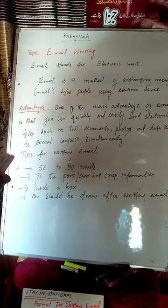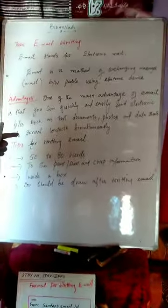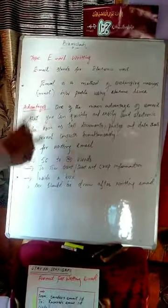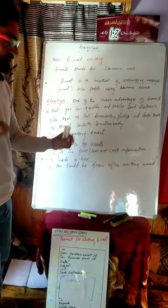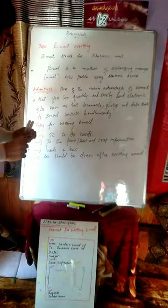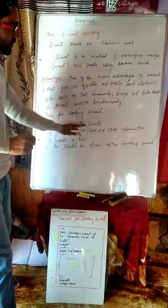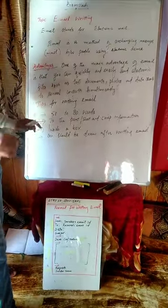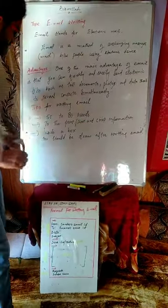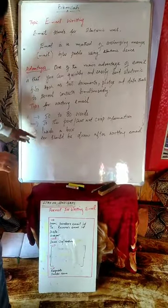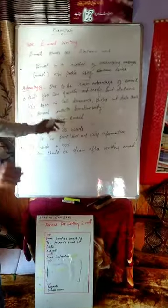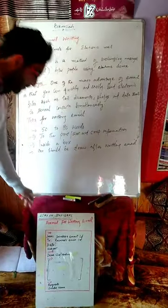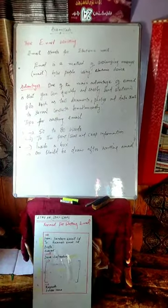After writing the email, a box should be drawn around it. To repeat the tips: first, 50 to 80 words; second, to the point with short and crisp information; third, precise and concise; fourth, a box should be drawn after writing the email. These are the tips for writing an email.